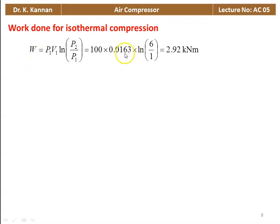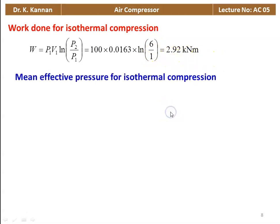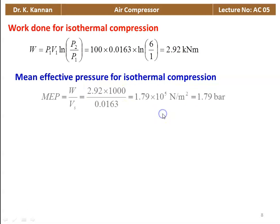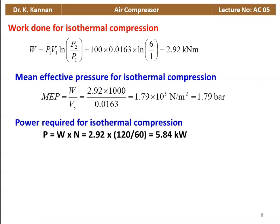Work done for isothermal compression: W = P1V1 × ln(P2/P1) = 100 kPa × 0.0163 × ln(6/1) = 2.92 kN·m. Mean effective pressure for isothermal: MEP = 2920 / 0.0163 = 1.79 × 10⁵ N/m², or 1.79 bar. Power for isothermal compression: P = W × N = 2.92 × (120/60) = 5.84 kW.